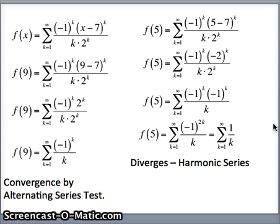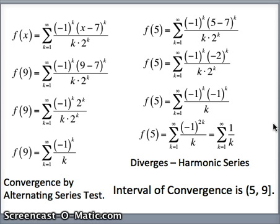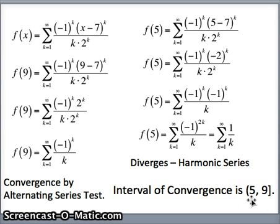5 is not included in the interval of convergence. Expressing that: we cannot include 5, but we must include 9. So the interval of convergence is from 5 to 9 with a round bracket at 5 — not including 5 — and a square bracket at 9. And that will conclude this lesson.